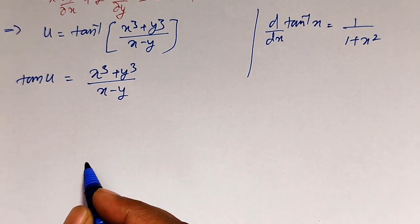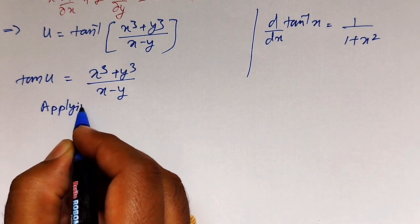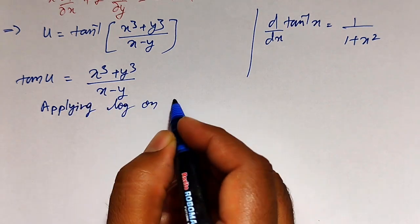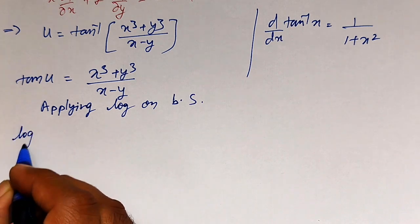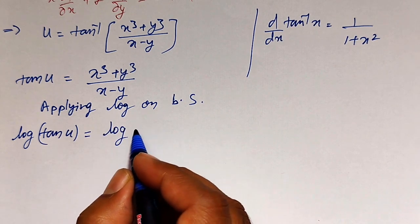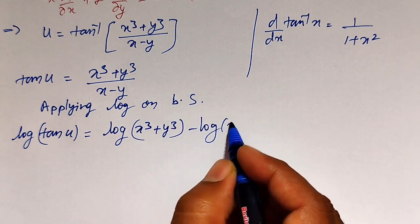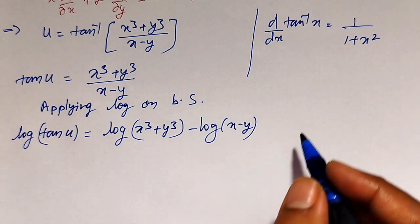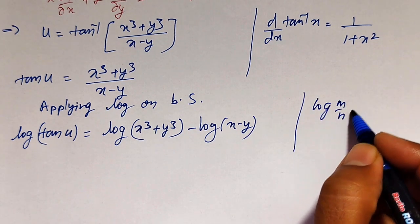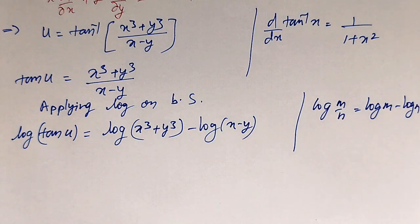Now we will apply the log on both sides so that differentiation becomes easy. Applying log on both sides: log of tan u is equal to log of x cube plus y cube minus log of x minus y. As we know, log of m by n is equal to log m minus log n. Using this formula, I can write like this. Now differentiating partially with respect to x and y, then simplifying it will become easy.